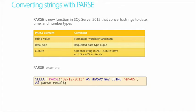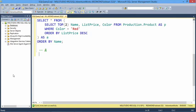PARSE is a new function introduced in SQL Server 2012 that converts strings to date, time, and number types — this is net new functionality, nothing deprecated. An important use case is converting strings to more exact data types, particularly numbers and dates, which is obviously a common problem. There's also a Cyrillic character we'll use in a demo shortly.